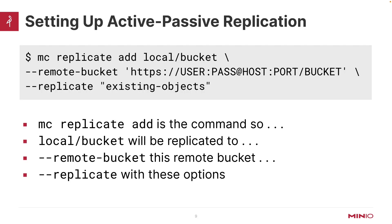When setting up active-passive replication, it's very easy — I simply do an MC replicate. This replicate command can take an add or an update, whatever I need to do, and I'm going to do a replicate add in this case. I'm adding to my local bucket a pointer to this remote bucket. The remote bucket I have to define with HTTPS — I have to give it the user, the password, the host, the port, and the bucket name — the fully qualified domain name, the full URL of what I'm going to be replicating to. The reason why I can't just use an alias here is because I'm telling the bucket where it's replicating to, and the bucket doesn't really know anything about the alias. I'm also telling it that I want to replicate existing objects. There's a whole list of different flags you can hand to replicate — take a look at our documentation for that. This sets up active-passive replication, and anything that I deposit into my local bucket will be replicated to my remote bucket.